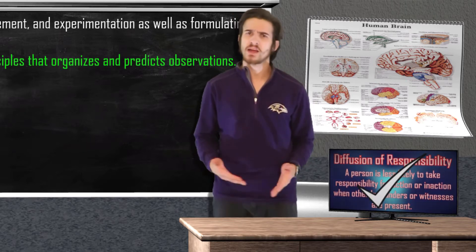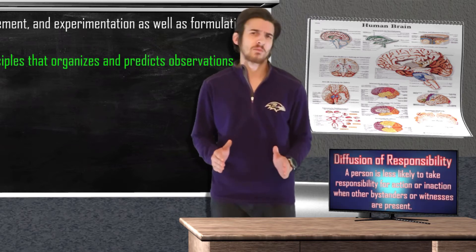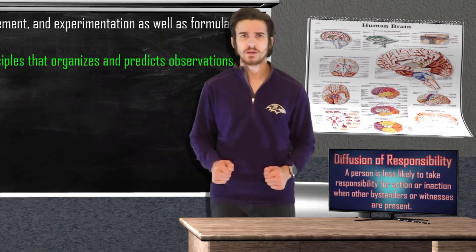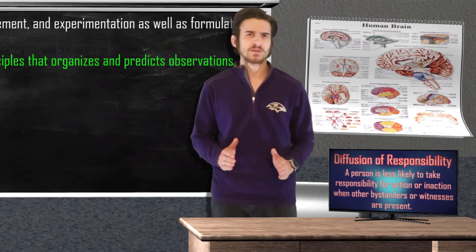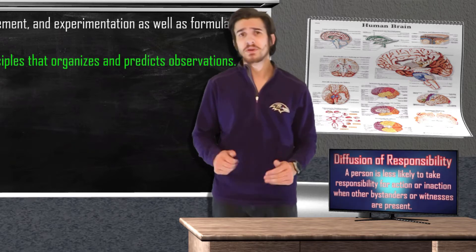Now this theory sounds pretty solid, right? Our explanation for why someone might not help someone in need when there are more people present is because we think that someone else might take responsibility for it. While this does sound like a very reasonable explanation, we still need to put it to the test.